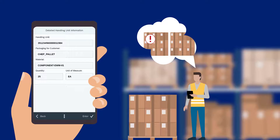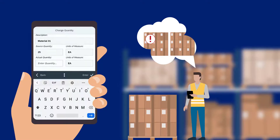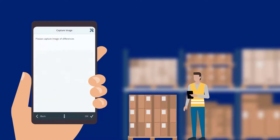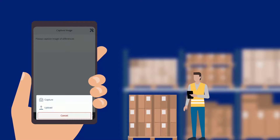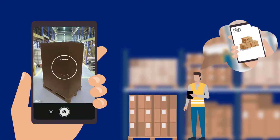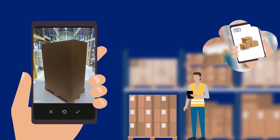The operator decides to amend the quantity disparity by clicking on the three dot menu button and selecting change quantity. As pre-built has been configured to utilise device features such as image capture, the operator can take note of the damaged box by taking a picture, which is stored directly within SAP.